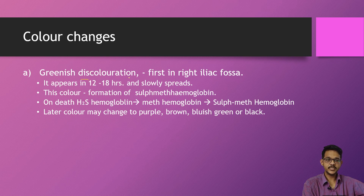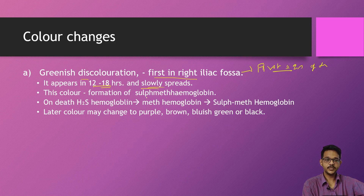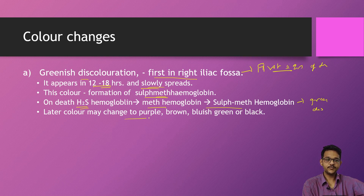Color changes are first seen as greenish discoloration in the right iliac fossa. This is the first sign of decomposition, appearing at around 28 hours, as rigor mortis is yet to disappear, and slowly spreads through the body. This color formation is due to sulfmethemoglobin — hemoglobin combines with H₂S (hydrogen sulfide) to lead to methemoglobin, which then forms sulfmethemoglobin, causing greenish discoloration seen in the right iliac fossa.